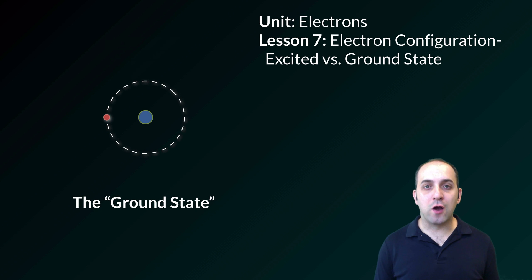Hi and welcome to Lesson 7 here in our Electrons Unit. In this lesson we're going to talk about electron configurations of excited state and ground state atoms and how to tell the difference.